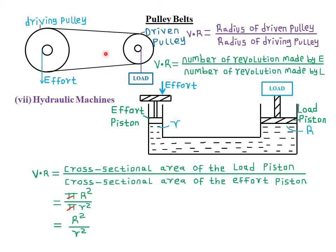To find the velocity ratio for a pulley belt, you simply use the formula: take the radius of the driven pulley — that is the small driven pulley or the pulley that has the load — then divide by the radius of the driving pulley where we apply the effort. Alternatively, the velocity ratio can also be given by the number of revolutions made by the effort pulley divided by the number of revolutions made by the load pulley.